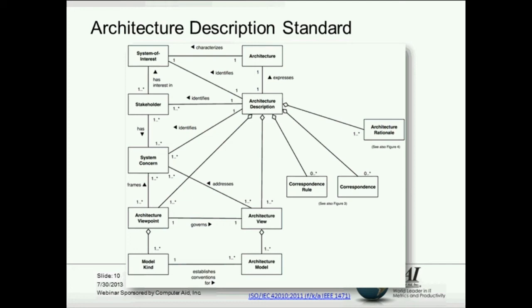So the whole idea is that the architecture viewpoint really defines the way that we look at the architecture description to address a specific concern, and we use those architecture viewpoints to actually construct what's called an architecture view. And that view is basically a snapshot of what the architecture model looks like from that particular architecture viewpoint.